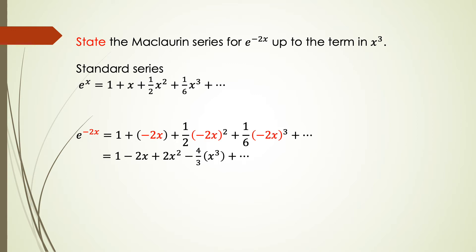To obtain the solution for e raised to the power of negative 2x, we just convert the expansion of e^x by replacing x with negative 2x. Then the expansion for e^(−2x) starts at 1, and we substitute x equal to negative 2x, giving bracket negative 2x plus 1 over 2 times (negative 2x)² plus 1 over 6 times (negative 2x)³ and keep going to higher powers of x.